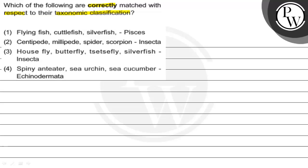Option 1: Flying fish, cuttlefish, silverfish — Pisces. Option 2: Centipede, millipede, spider, scorpion — Insecta.